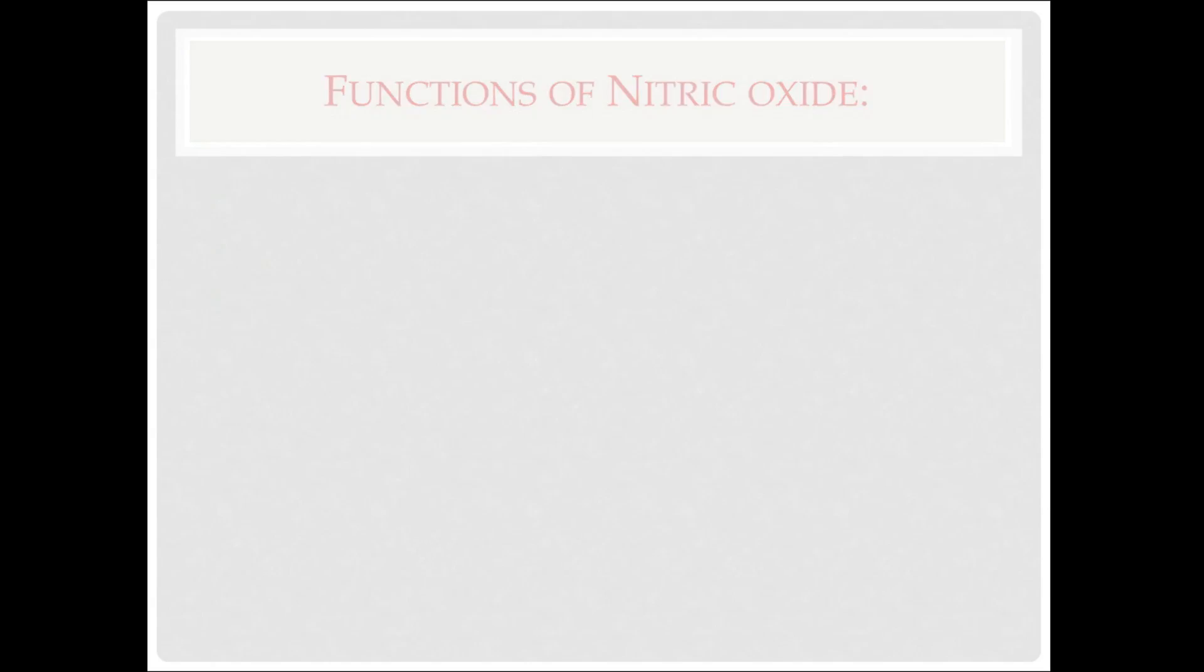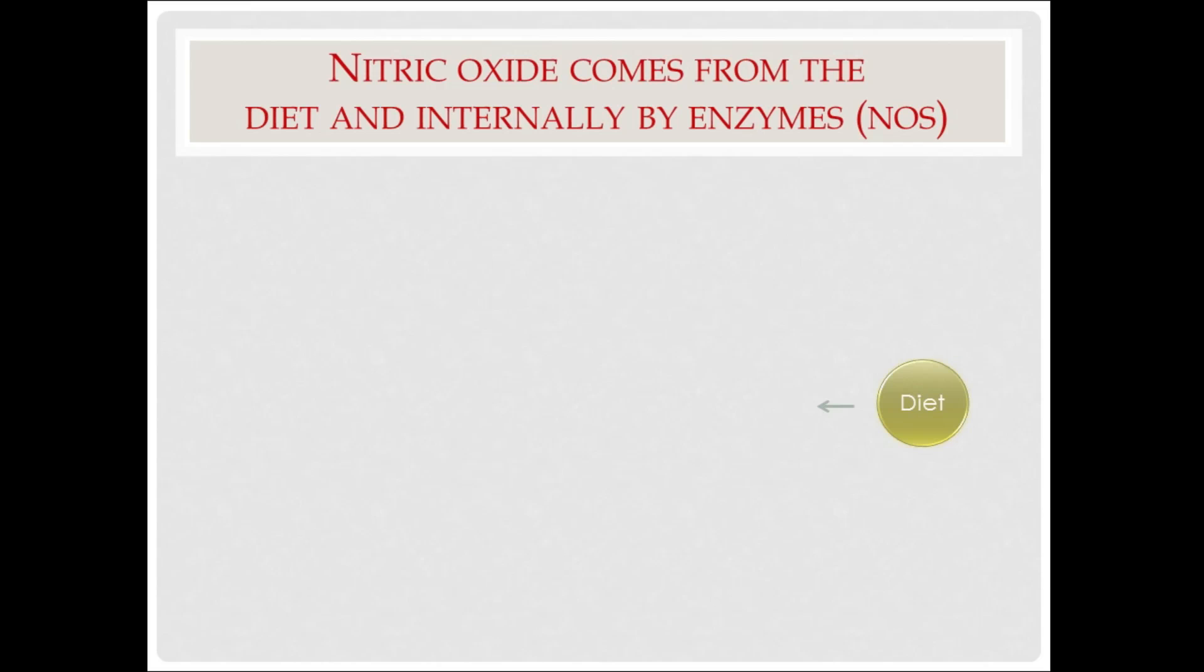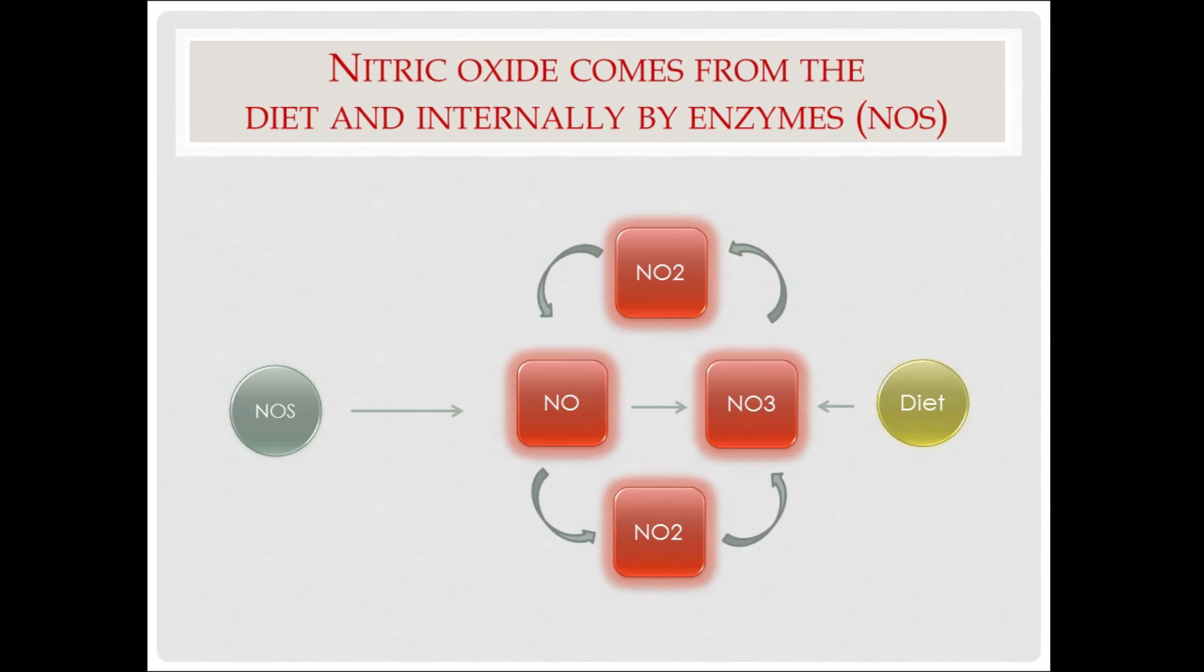Nitric oxide comes from two sources, through our diet, and from an enzyme called nitric oxide synthase, here represented as NOS. Through our diet, we get nitrates in the form of nitrites, which are found in cruciferous vegetables like broccoli, asparagus, and in beets. These have high concentrations of NO3, or nitrite. Nitrite can be converted to nitrate, and nitrate can be converted to nitric oxide. Nitric oxide can be reconverted to either nitrate or nitrite, so the cycle is continuous. The body simply selects the chemical it needs most at the time and uses it.